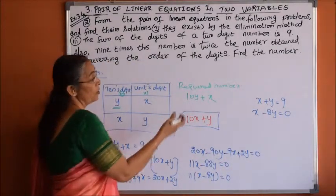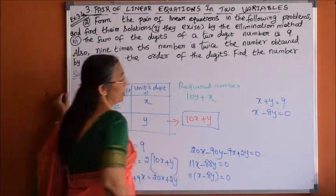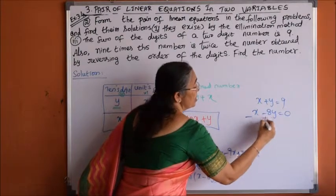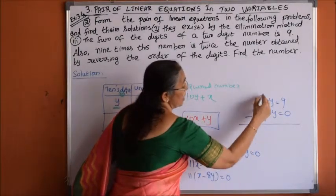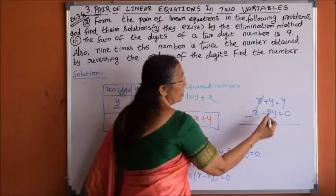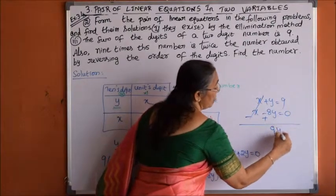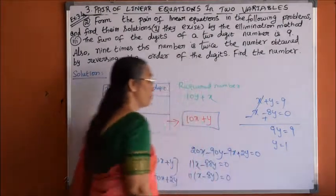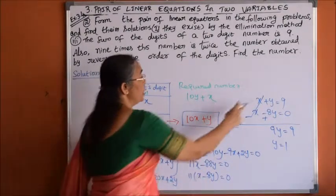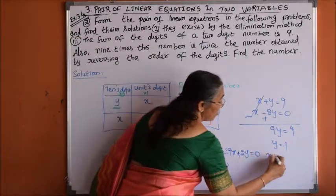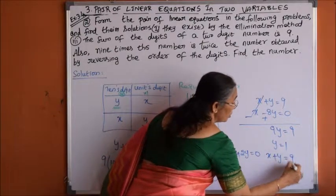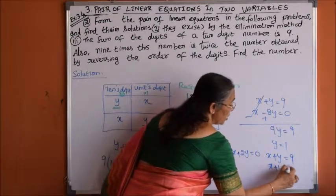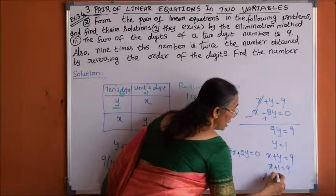We solve by the elimination method. Subtracting the second equation from the first: x minus x cancels, leaving y plus 8y, giving 9y equals 9, so y equals 1. Substituting y equals 1 into x plus y equals 9 gives x plus 1 equals 9, so x equals 8.